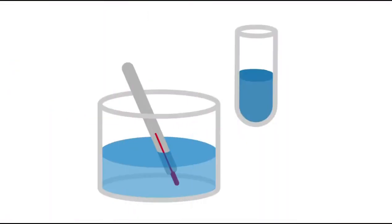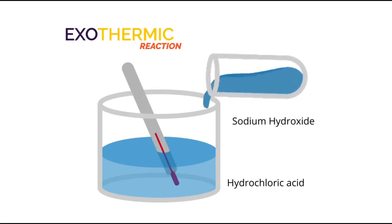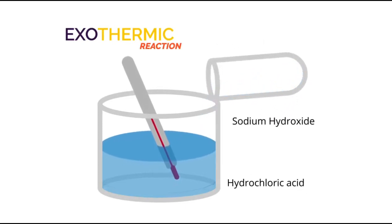It is easy to detect exothermic reactions, just get your thermometer and see if the temperature increases. Watch the hydrochloric acid and sodium hydroxide solution being mixed and see how the thermometer increases.